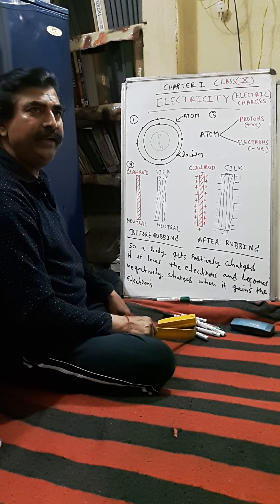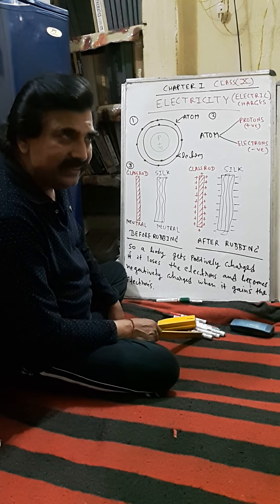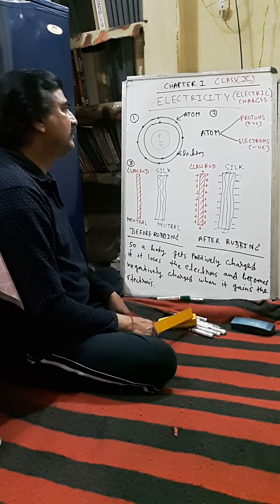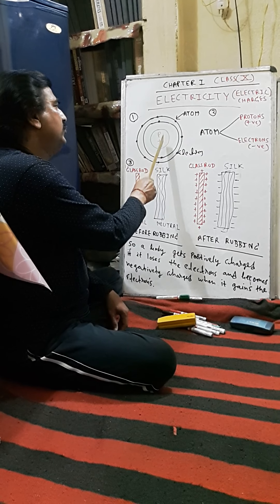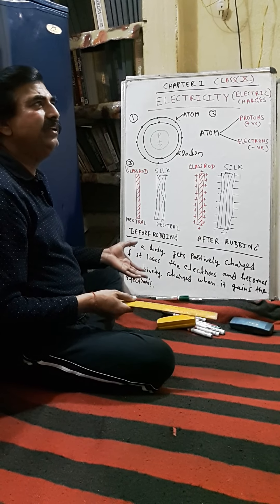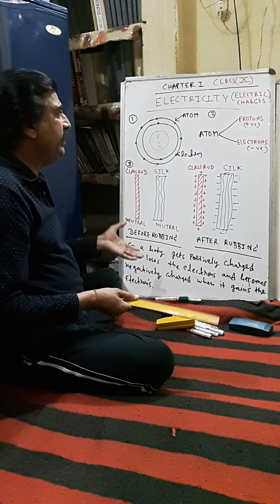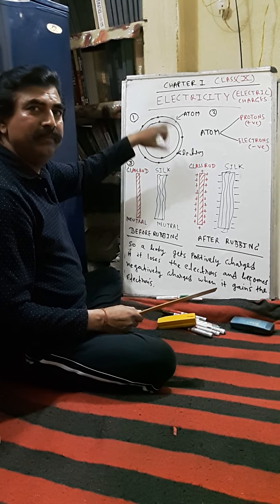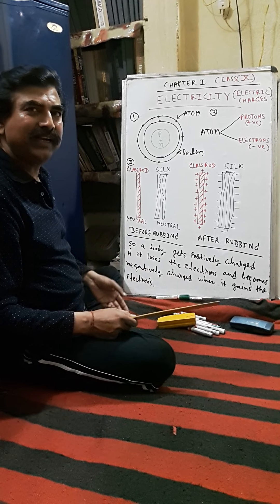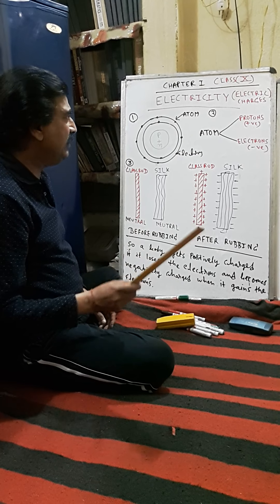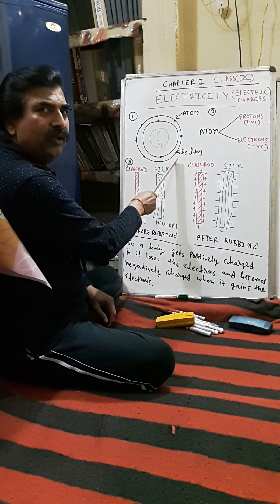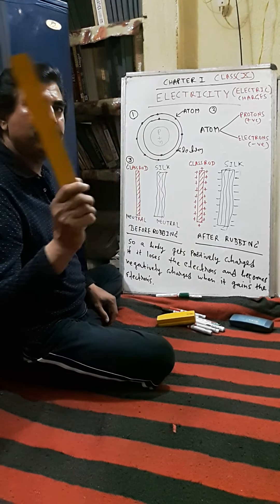Every object in this world is made up of protons, neutrons and electrons. As a whole, it is a neutral atom. Why is it neutral? Because the number of protons and the number of electrons are equal in number.